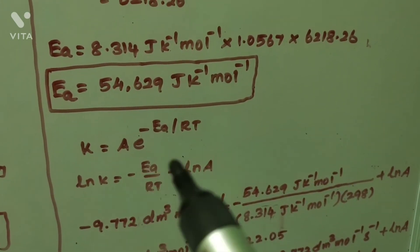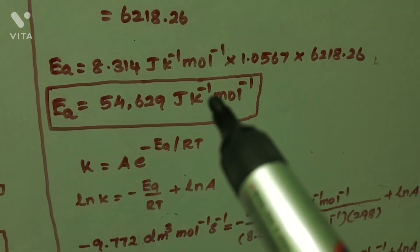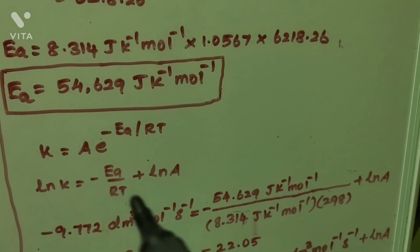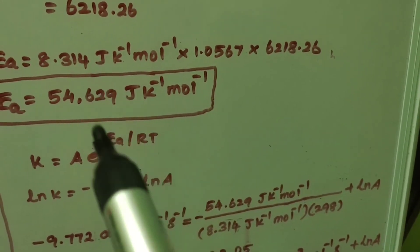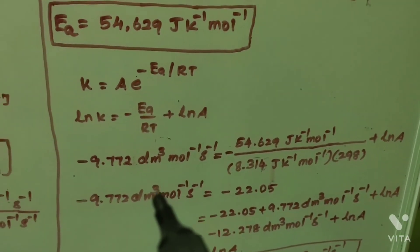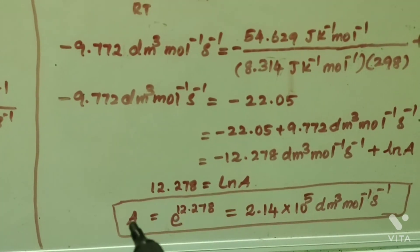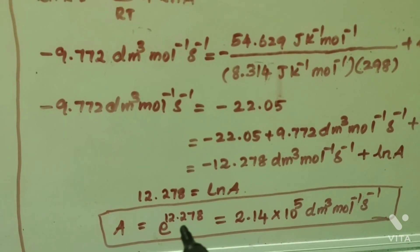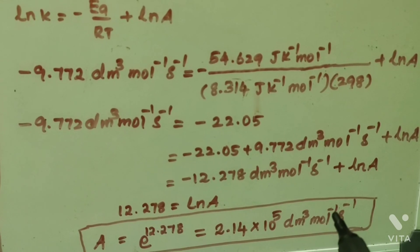Using ln K = −Ea/(RT) + ln A, with Ea = 54629 J mol⁻¹, R = 8.314 J K⁻¹ mol⁻¹, and T = 298 K, the final answer is: the Arrhenius pre-exponential factor A = e^(12.278) = 2.14 × 10⁵ dm³ mol⁻¹ s⁻¹.